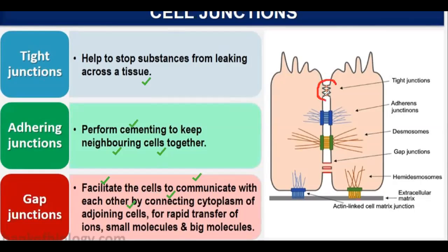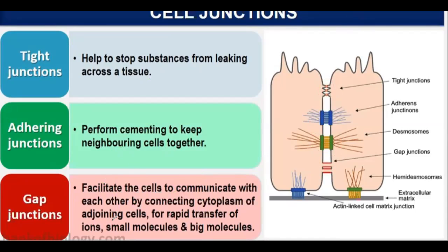In diagrams, tight junctions prevent any type of leakage. Adhering junctions act as cementing material connecting the two tissues. Gap junctions allow cytoplasm exchange — connecting two cells so that ions and small or large molecules can be rapidly transferred.